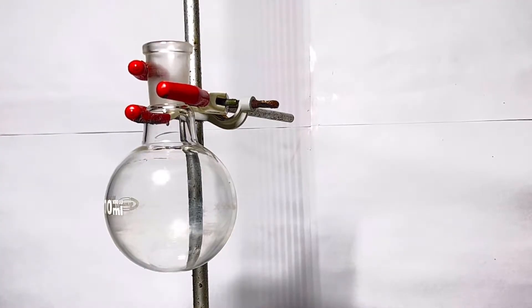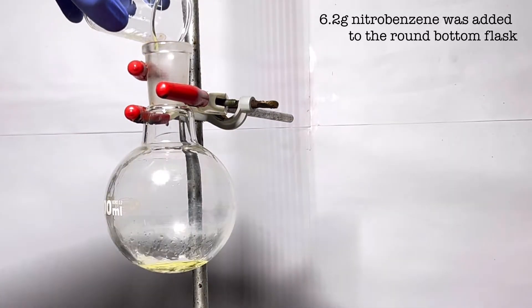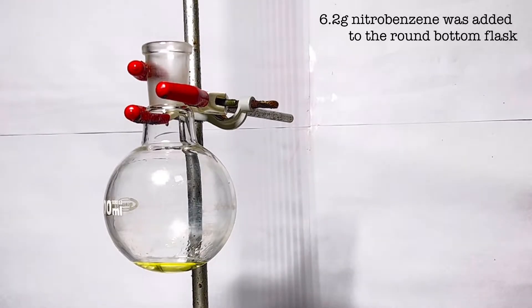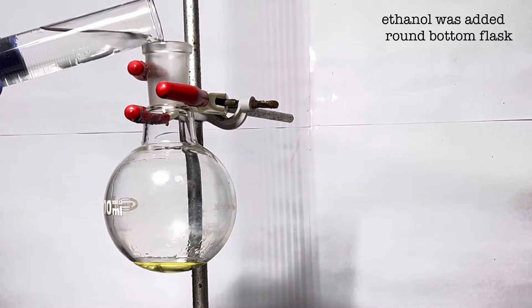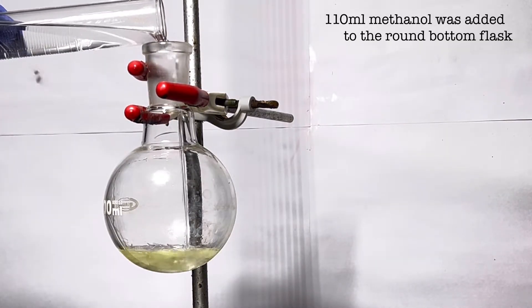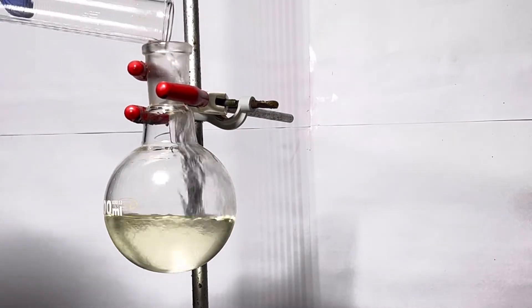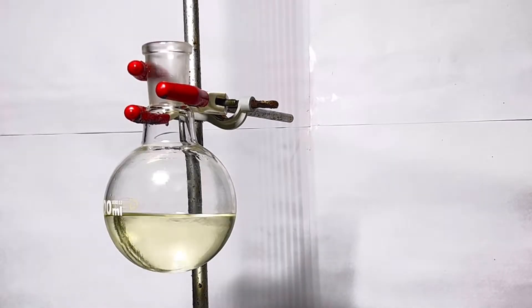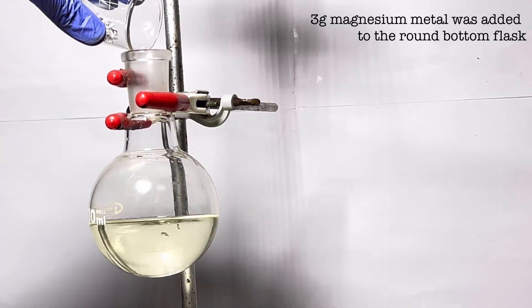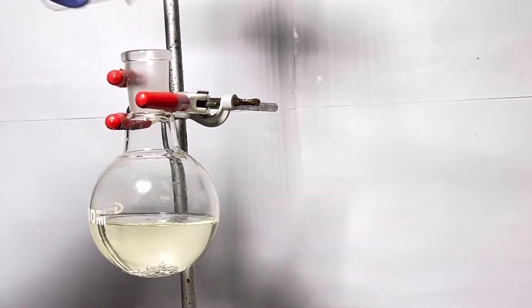Start by fixing a 300 ml round bottom flask on a stand using a clamp. Add 6.2 grams of nitrobenzene to the flask. 110 ml of methanol was measured in a graduated cylinder and was transferred to the flask. 3 grams of magnesium metal turnings were then added to the round bottom flask.